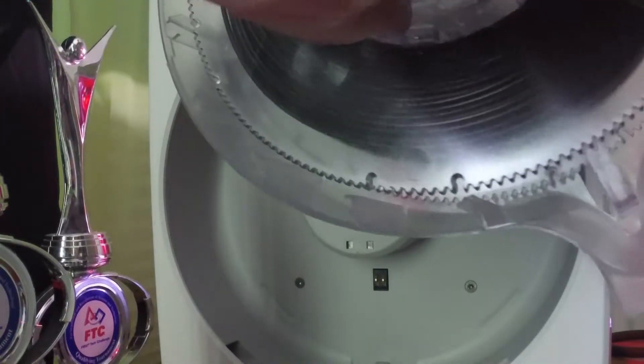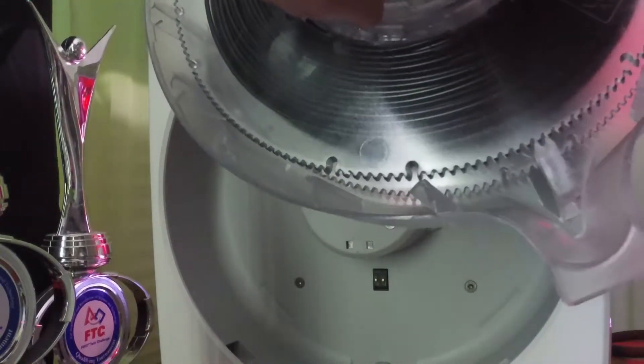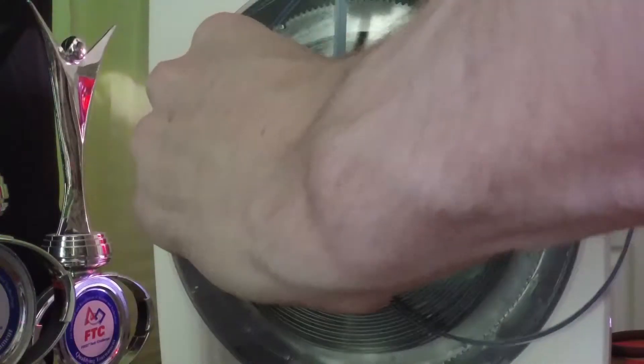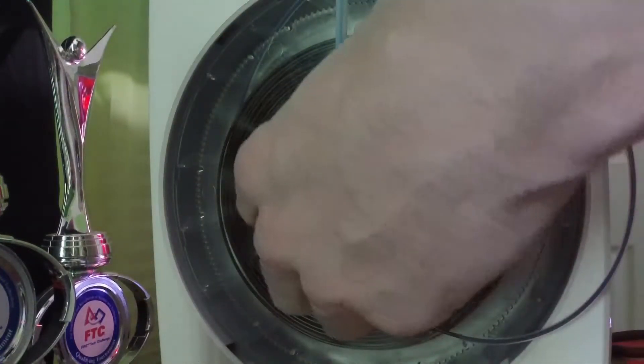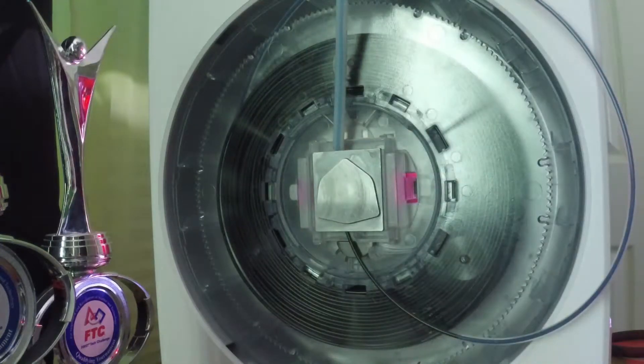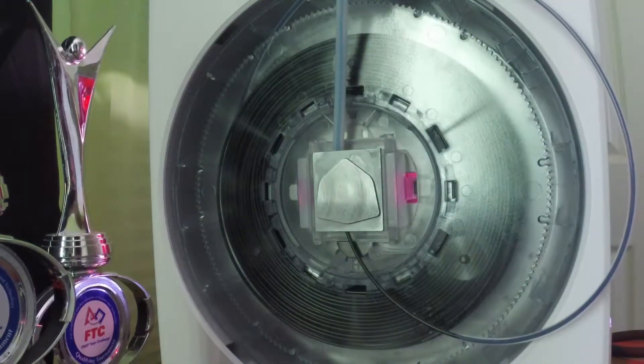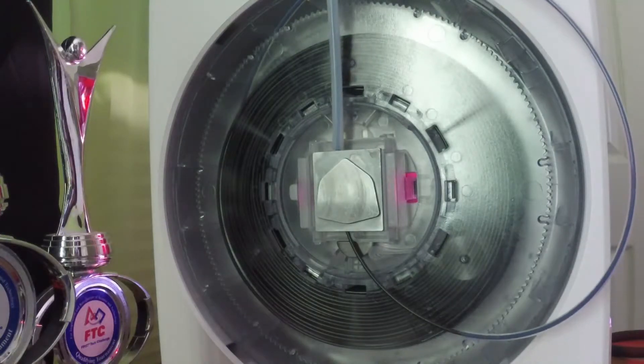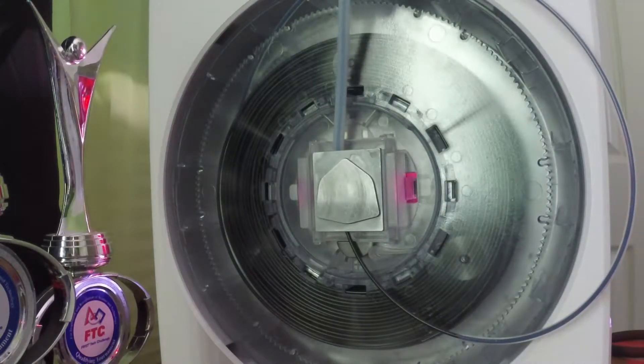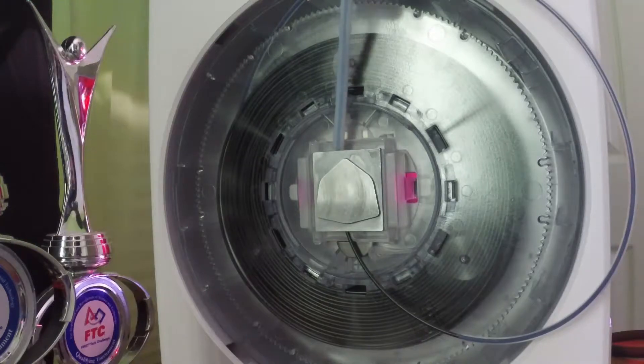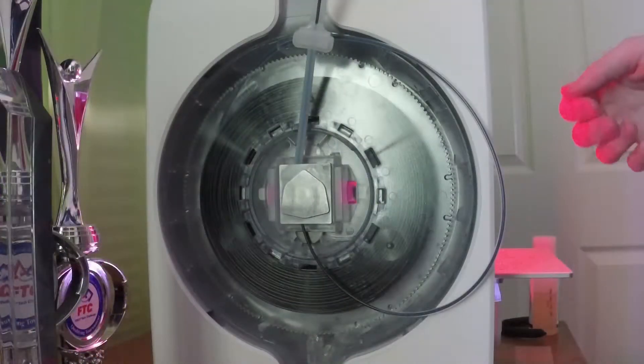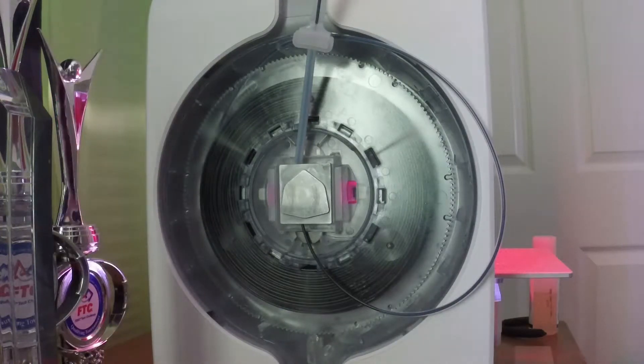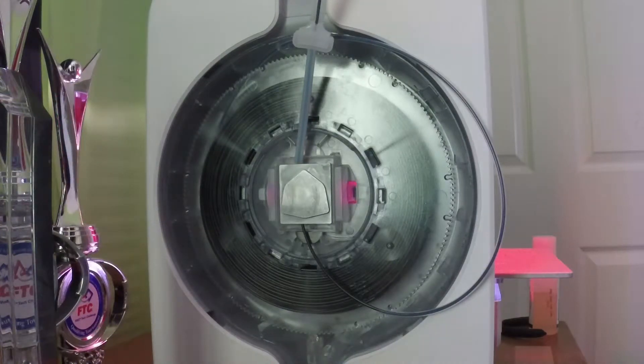Now, reinstall the filament cartridge with the top removed. Start a print where the material that was jammed is used. For example, if your black filament cartridge is jammed, start a print which uses the black filament.